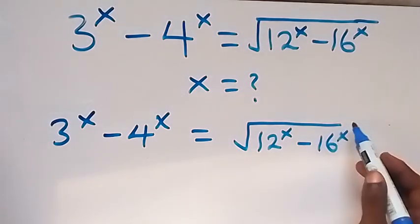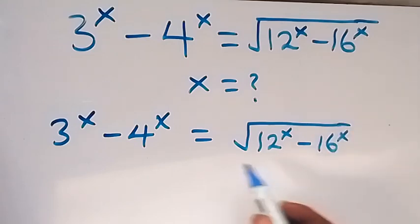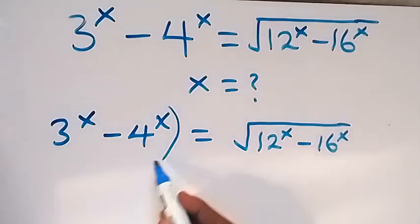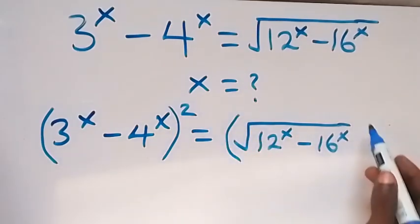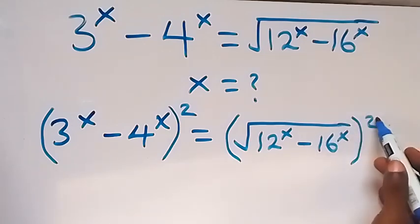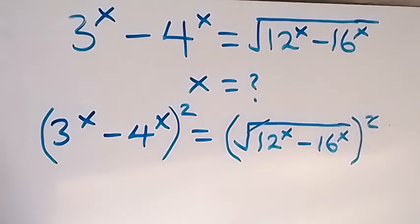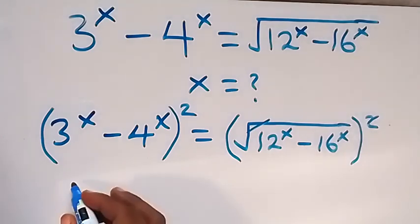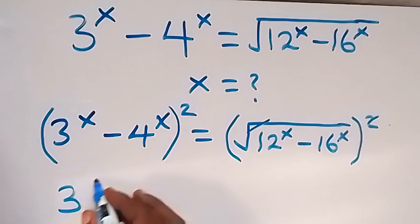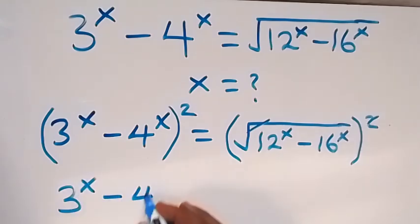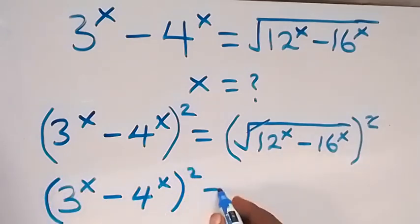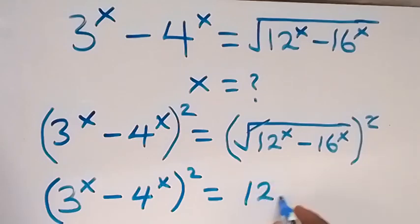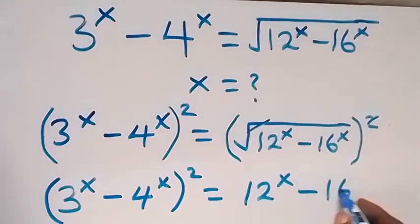From here we can remove the square root on this side, and to do that we introduce a square on both sides. We square this side and also square this side, such that the square will remove the square root, and this will become 3 raised to power x minus 4 raised to power x, all squared, equals to 12 raised to power x minus 16 raised to power x.